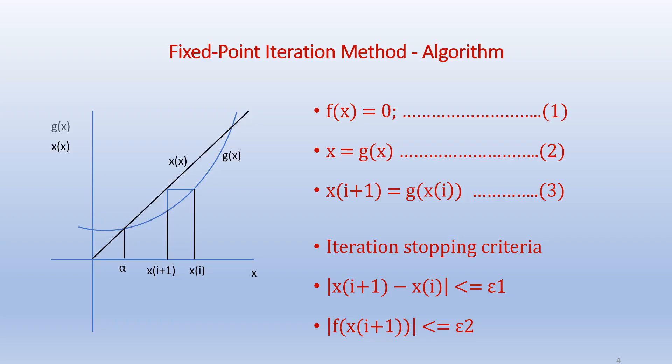This is shown on the left hand side: g(x) is a curve in blue and x = x is a straight line shown in black. So we assume an initial value x(i) and we find g(x). Once we get g(x), we equate that to x, so the x at the next iteration x(i+1) = g(x). So this procedure is repeated until the solution gets converged.